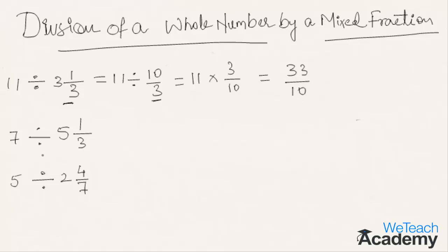Now, let us solve the second example. What is 7 divided by 5 and 1 by 3? This equals 7 divided by the improper form of 5 and 1 by 3. 5 3's are 15 plus 1, that is 16 by 3.